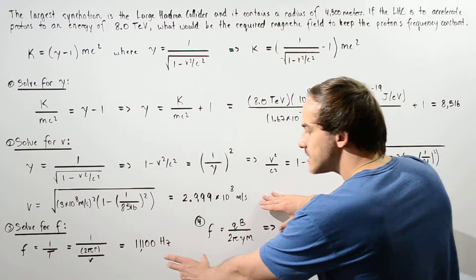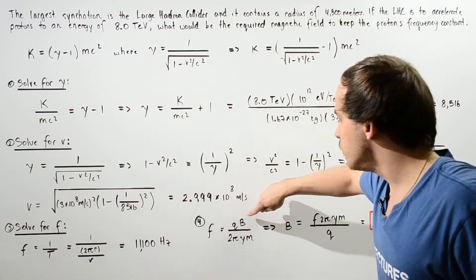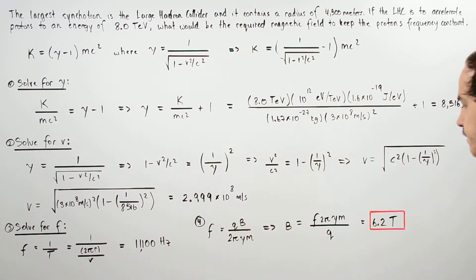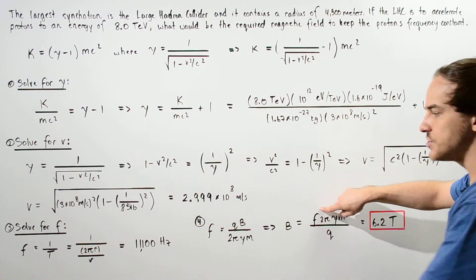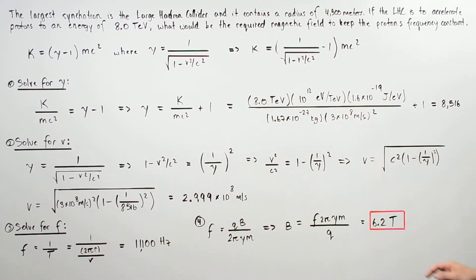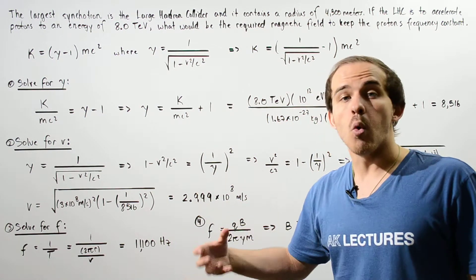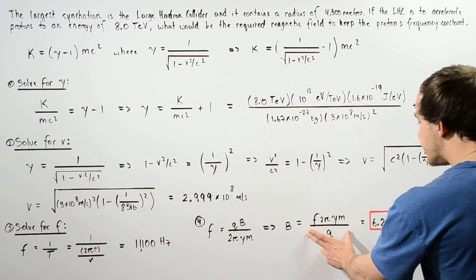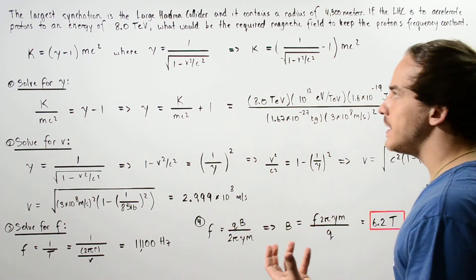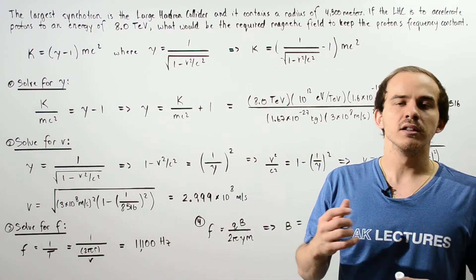In the final step, since this frequency remains constant, we use the equation: frequency equals QB divided by (2 pi times gamma times M). Rearranging and solving for the magnetic field B gives: B equals frequency times 2 pi times gamma times M divided by charge Q. With M equal to 1.67 times 10 to the negative 27 kilograms and Q equal to 1.6 times 10 to the negative 19 coulombs, we get a magnetic field of 6.2 teslas. This is the required magnetic field when the proton has been accelerated to a kinetic energy of one tera electron volt.